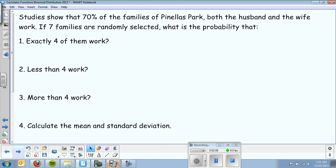So let's walk through a problem and show you how to use the calculator. Studies show that 70% of the families of Pinellas Park, both the husband and the wife work. If 7 families are randomly selected, what is the probability that, and then we'll answer some questions.